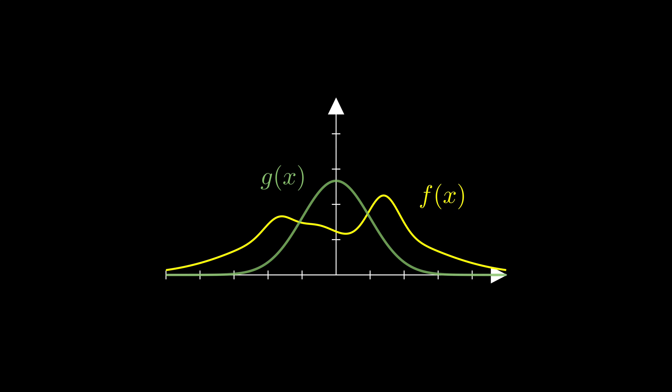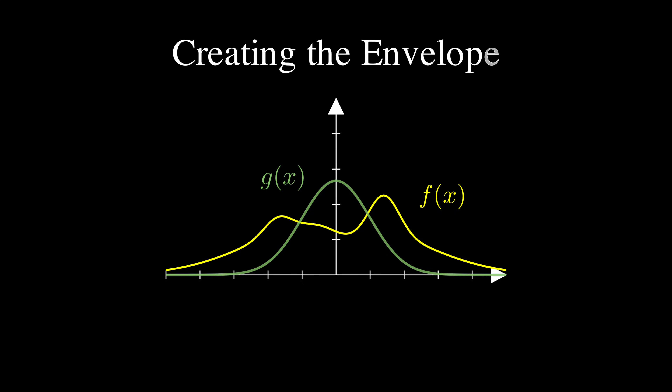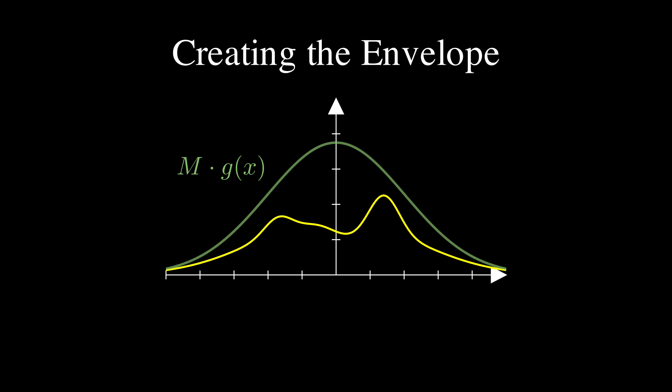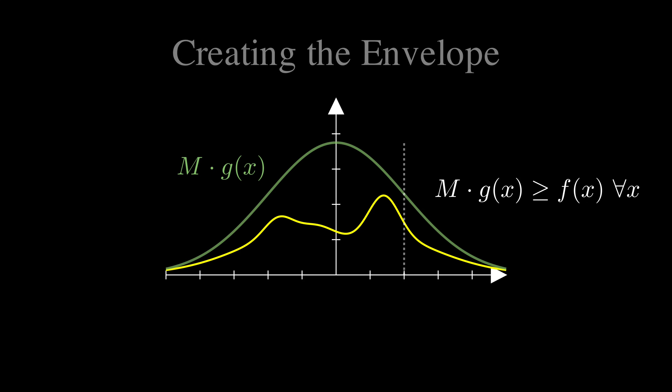But we need one more ingredient. We have to scale up our proposal distribution g by some constant m, creating m times g(x). We choose m large enough so that this scaled version completely envelops our target function f(x) everywhere — meaning m times g(x) must be greater than or equal to f(x) for all possible x values — essentially creating a probabilistic ceiling above our target.